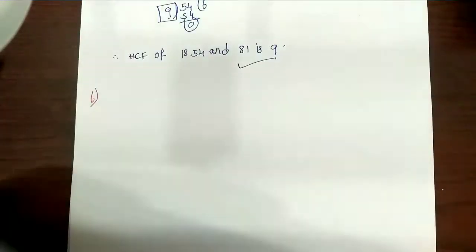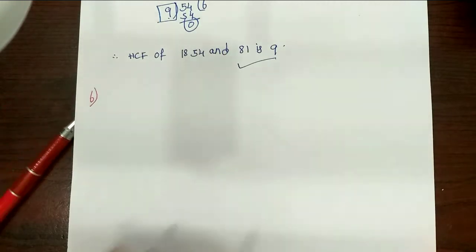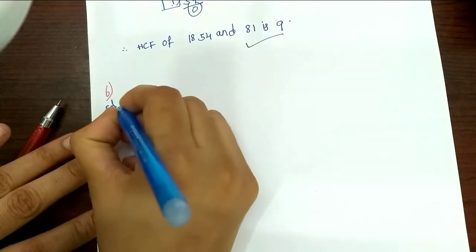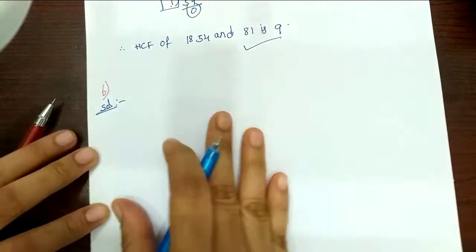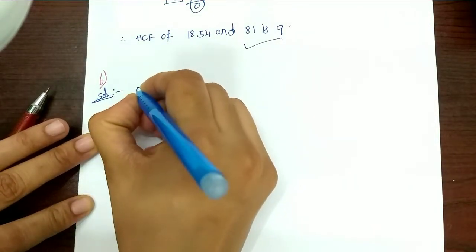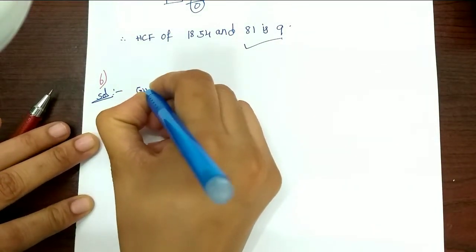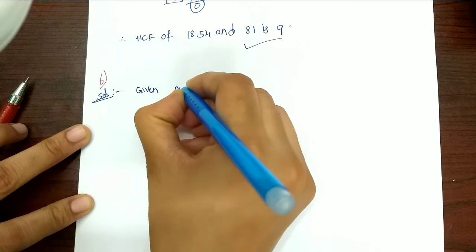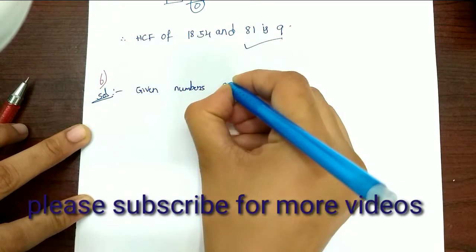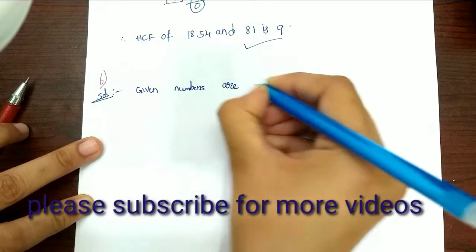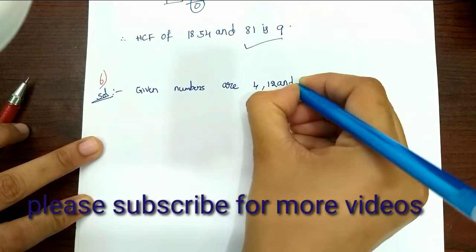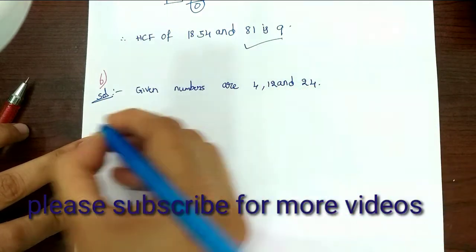Let's give a solution. First, we have given numbers. The numbers are 4, 12, and 24. First, we will do prime factorization method.